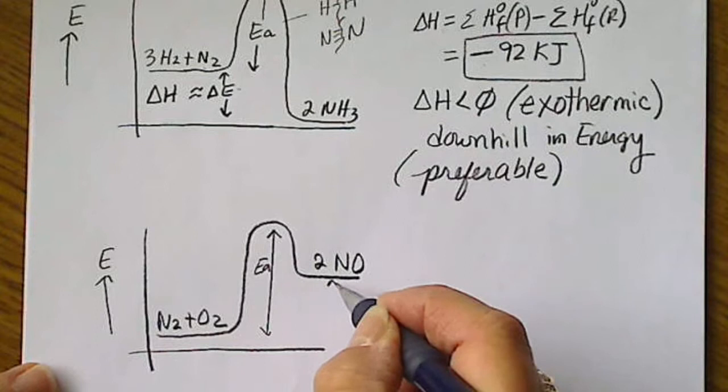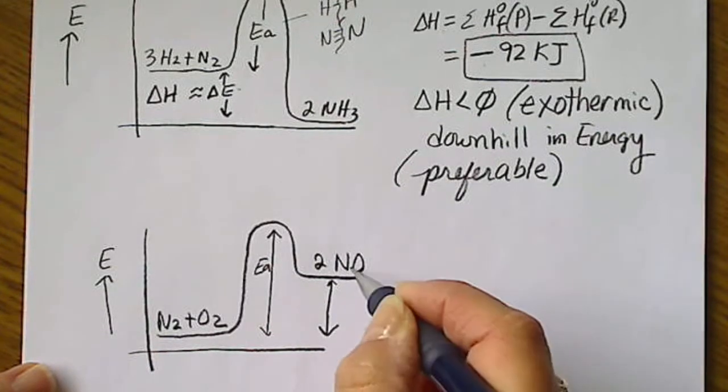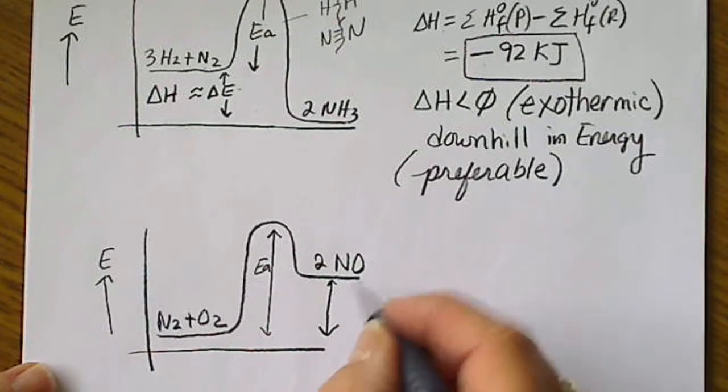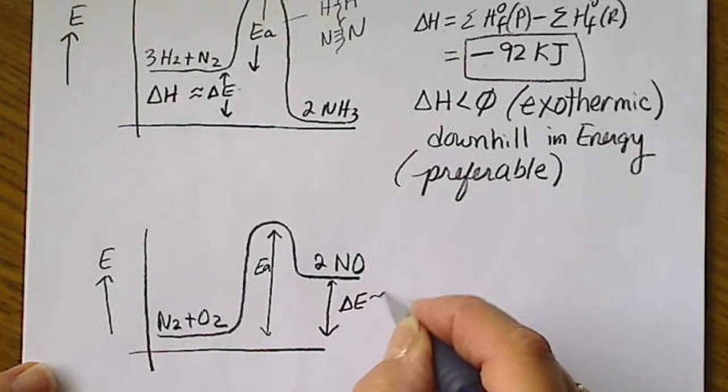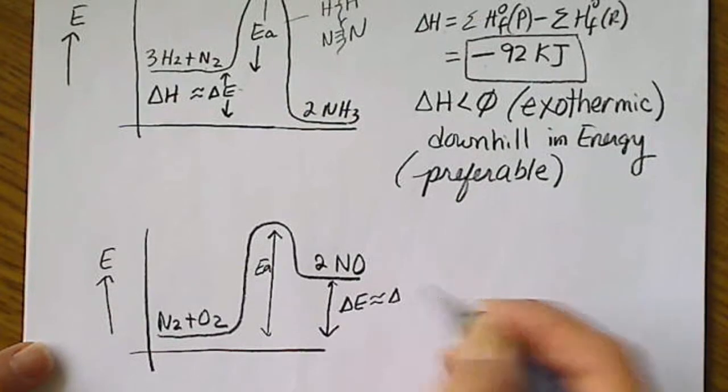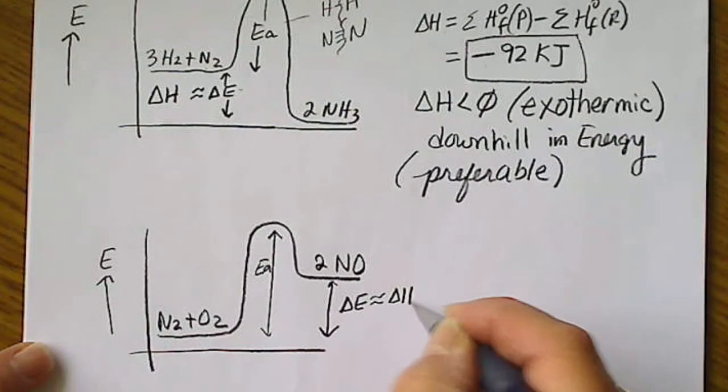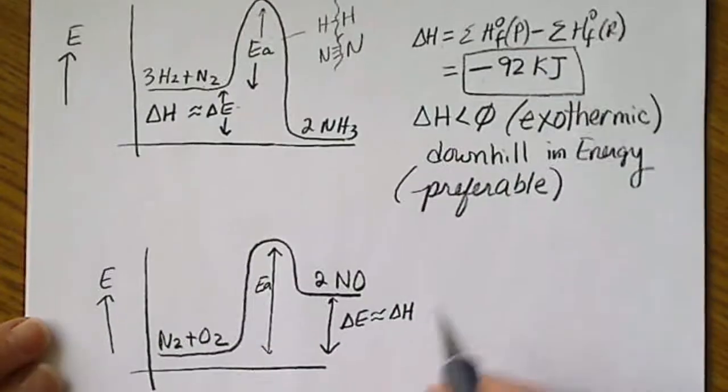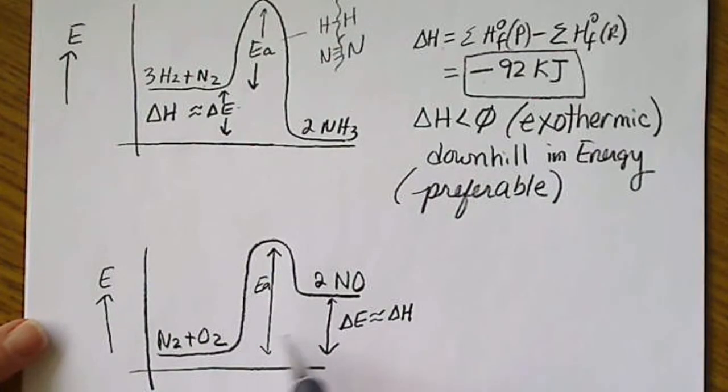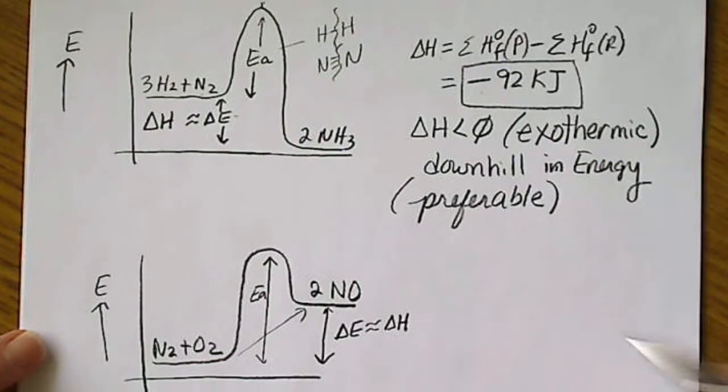But the net change from products to reactants is a positive value. So again, this is really a change in energy, but it's very closely approximated by delta H. And in this case, this reaction, the net result is it goes uphill in energy. So we call this endothermic.